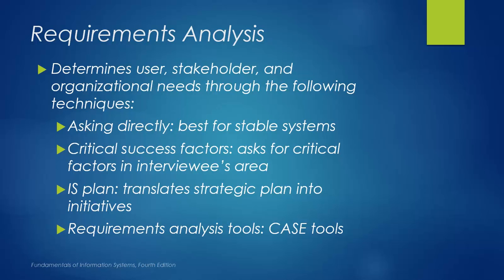An information system plan will be created to translate strategic planning into initiatives in the design process. We can use computer-aided software engineering, called CASE, as tools to provide automated assistance for software and system development. CASE is considered tools and methods to support an engineering approach to systems development at all stages of the process. Since we are in the design stage, this is called front-end CASE analysis, which provides support for the early stages in the system's development lifecycle, such as requirements analysis.